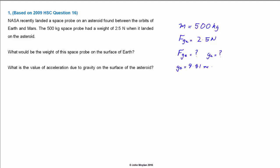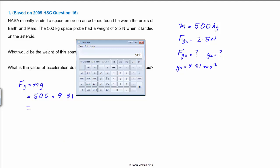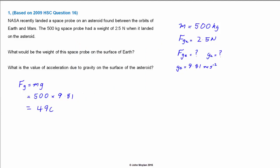The value in the HSC data sheets is actually 9.8 m/s². Our formula is F_g equals mg. We plug in the values: mass is 500 kilograms and acceleration due to gravity on Earth is 9.81 m/s². Using our calculator, 500 multiplied by 9.81 gives a value of 4905 Newtons for the weight — the force due to gravity on the space probe on the surface of the Earth.